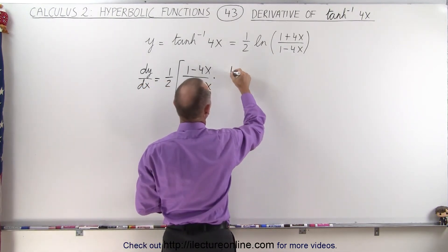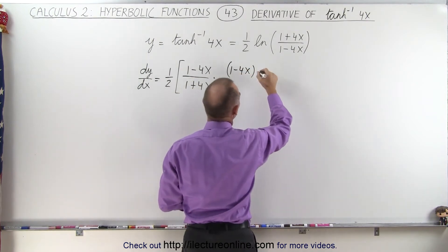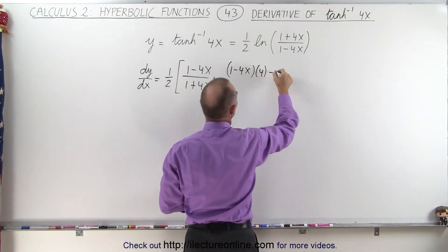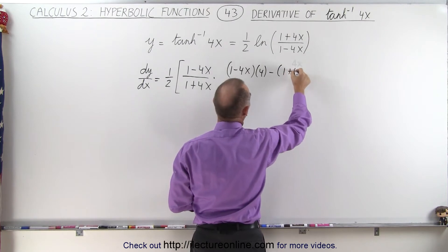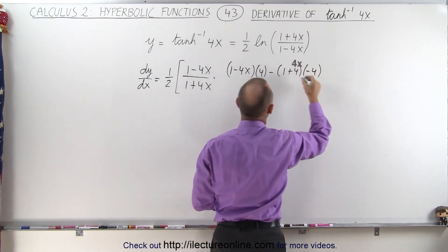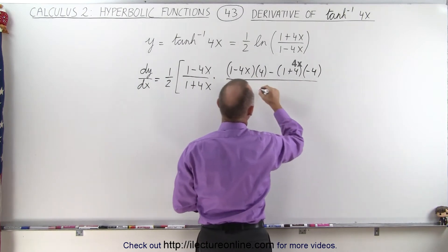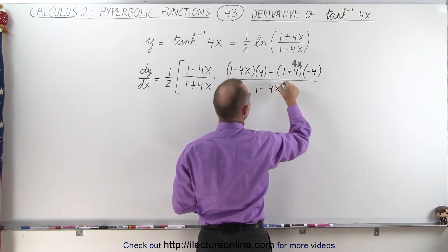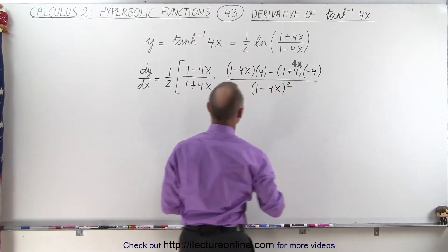So we take the denominator, 1 minus 4x, times the derivative of the numerator, which is 4, minus the numerator, 1 plus 4x, times the derivative of the denominator, which is a minus 4, all divided by the denominator squared. Like this.